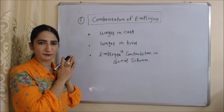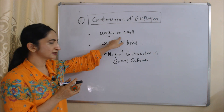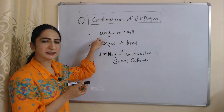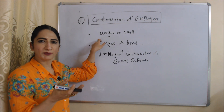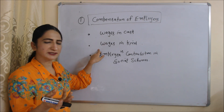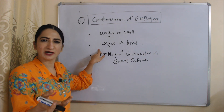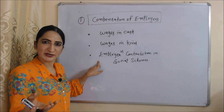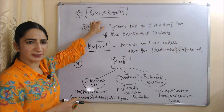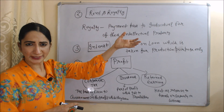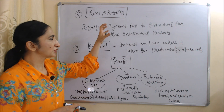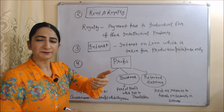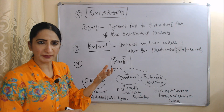First component is compensation of employees, which includes wages in cash, wages in kind, and employers' contribution in social schemes. Wages in cash means monetary benefits — wages, bonus, commission, etc. Wages in kind means non-monetary benefits, for example house, car, etc. Employers' contribution in social schemes includes provident fund, gratuity, and pension plan. Second component is rent and royalty — rent received from land or building, and royalty is the payment made to an individual for use of their intellectual property, for example an author receiving payment from a publisher each time their book is sold.